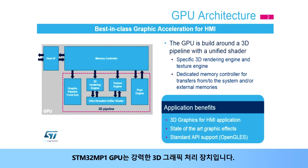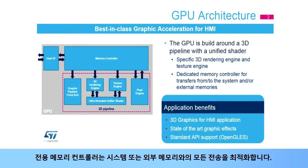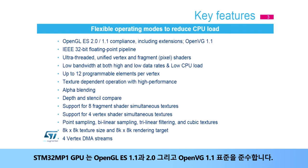The STM32MP1 GPU is a powerful 3D Graphic Processing Unit. Its 3D pipeline is built around an ultra-threaded unified shader with a specific 3D rendering engine and a texture engine to efficiently render 3D scenes. A dedicated memory controller optimizes all the transfers from and to the system or external memories.